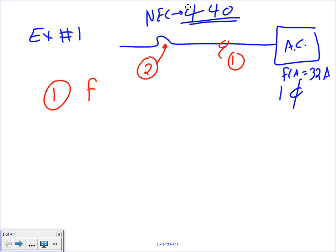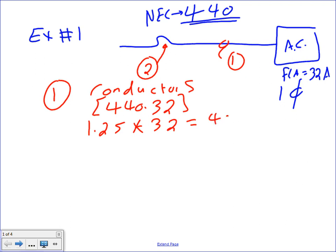Number one, the feeder conductors. If you go to Article 440.32, it will tell you: take 1.25 and multiply it by 32. So 1.25 times 32 equals 40 amps.